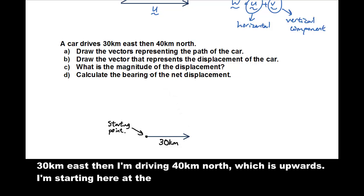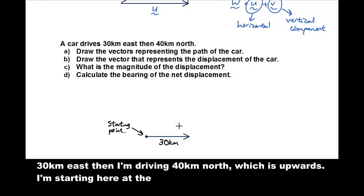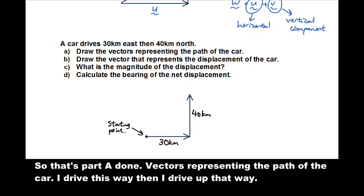So this is the 30 to the east. And then I drive north 40 kilometers. So north is upwards. So I'm going to draw. So that's part a done. We have vectors representing the path of the car. I drive this way, then I drive out that way.